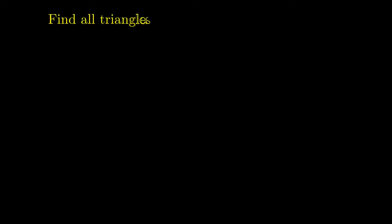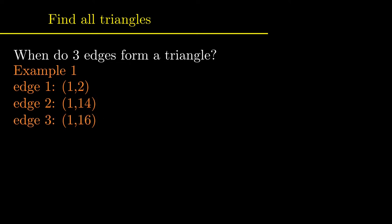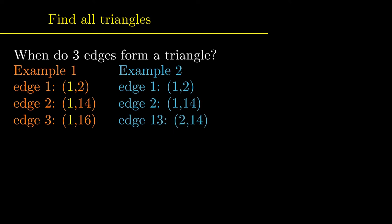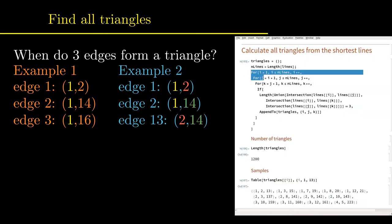Next, it is investigated which of these edges form triangles. In order to do so, edges have to have common points. In the first example, all three edges have the point 1 in common. However, this is not sufficient to form a triangle. In this case, the three lines all meet in one point. In the second example, any two pairs of edges have a point in common. And in total, there are three different common points. These are the conditions for a triangle. The computer scans through all triplets of edges and finds all of them that fulfill these properties.